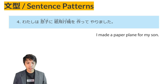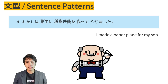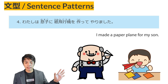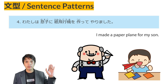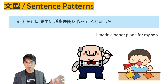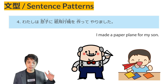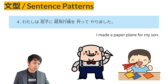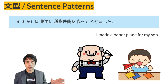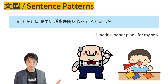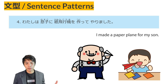Sentence Pattern No. 4: Watashi wa musoko ni kamihikoki wo tsukutte yarimashita. Yarimashita follows the same pattern as verb te agimashita — they share the same meaning. However, yarimashita is commonly used for subordinates, younger people, or animals and plants. These days, agimashita is often used instead for younger people as it sounds more polite, while yarimashita is reserved for animals or plants.